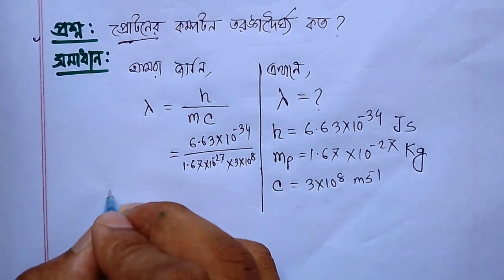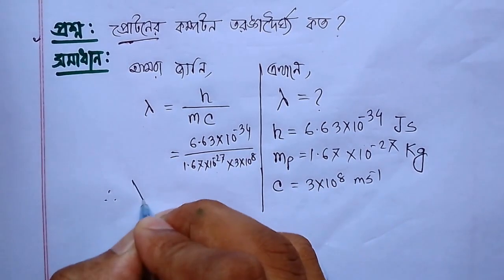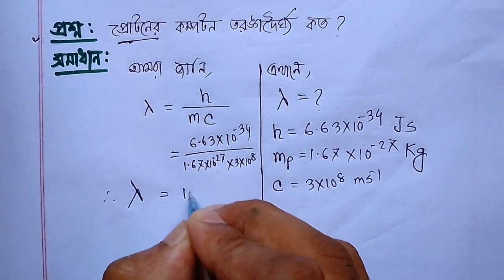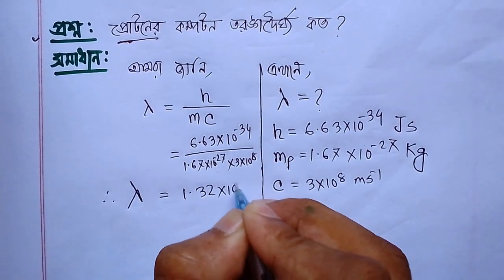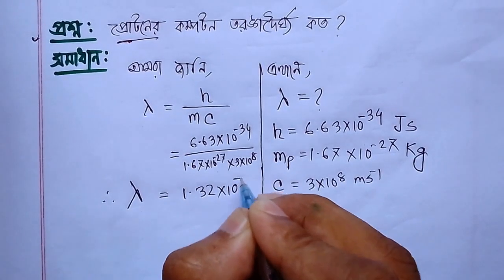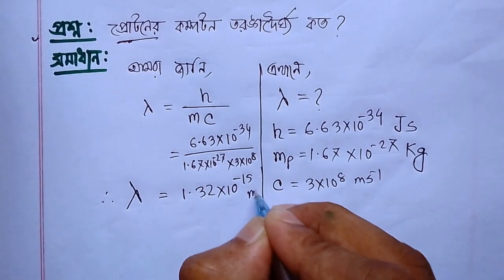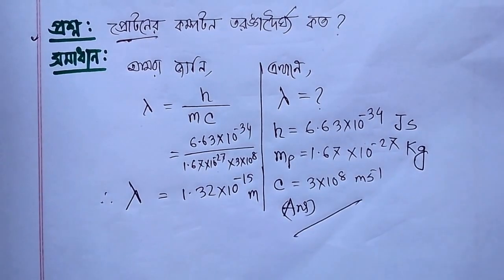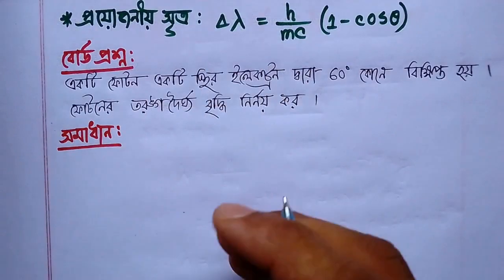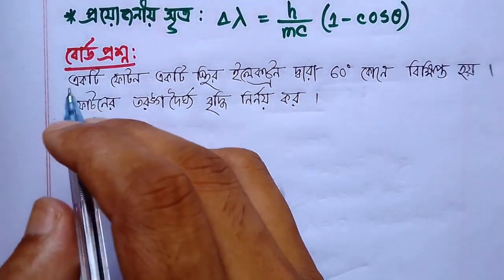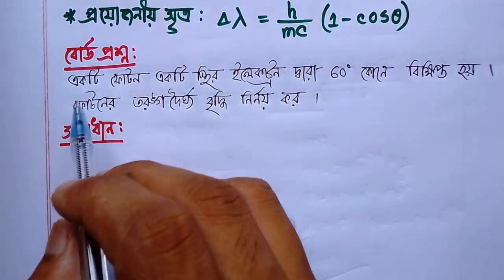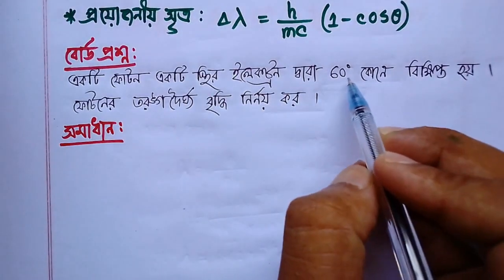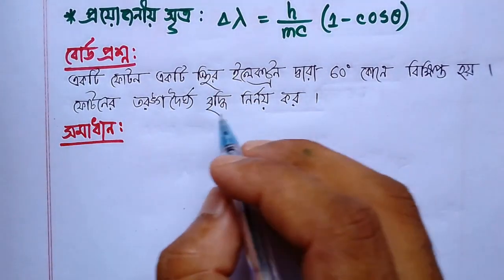The power of the component is 1.32 times x. The power of the component is 1.32 times x.